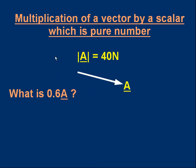Now let's talk about how we can multiply a vector by a scalar — first, by a scalar which is a pure number, meaning a number without units, such as 6, 2.8, or minus 0.5. We'll talk about how we multiply by scalars which have units very soon. Let's do an example: suppose we have a vector a, with a magnitude of 40 newtons — so it's a force vector in the direction shown by the arrow.